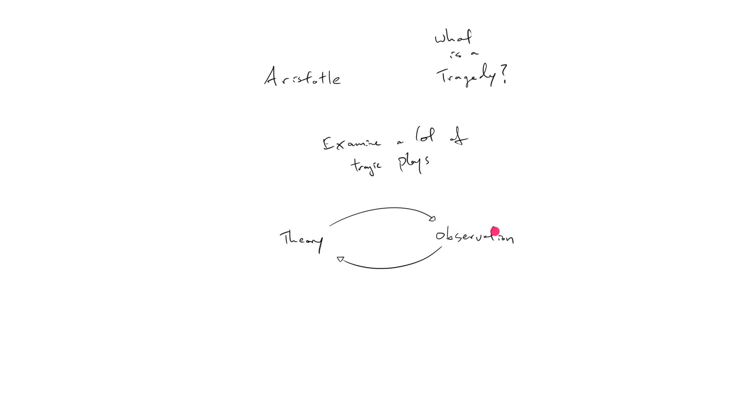So it's this process of making observations, using the observations to formulate theories, and then testing your theories on more observations, this empirical process that we're going to borrow. Because just as Aristotle is trying to understand what a tragedy is, we're trying to understand what an LR question is.